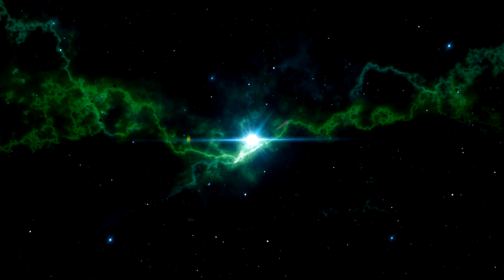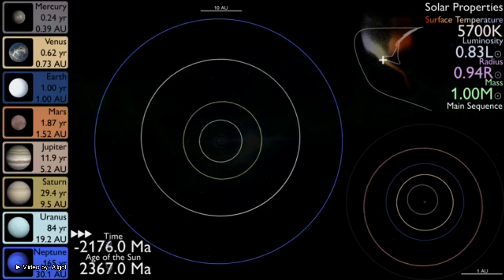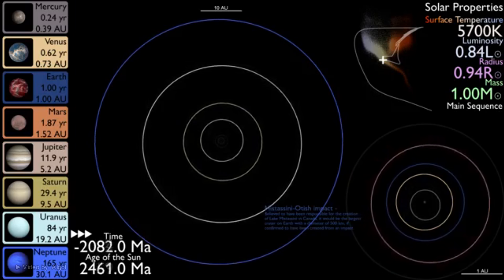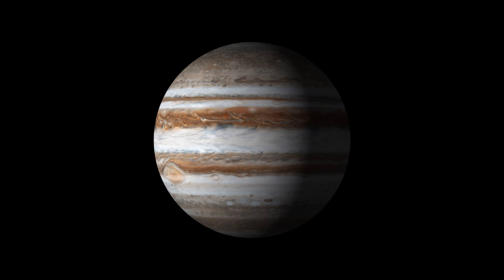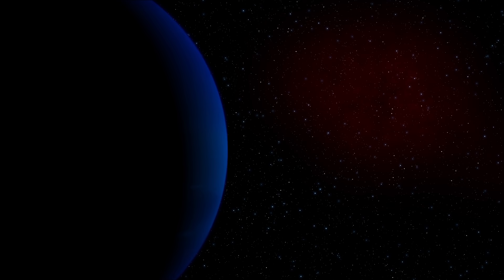Named after the French city, the Nice model attempts to explain some of the oddities which arose in the early solar system, mainly the planet's orbits. In particular, the gas giants Jupiter, Saturn, Uranus and Neptune - their orbits cannot really be explained naturally.